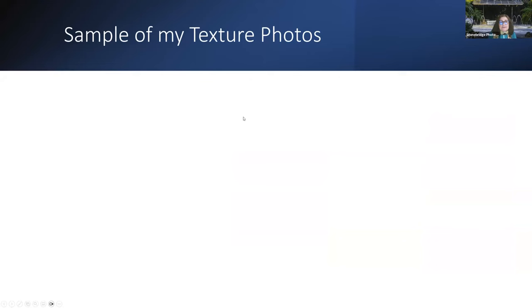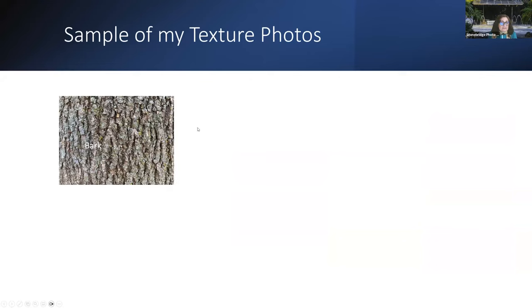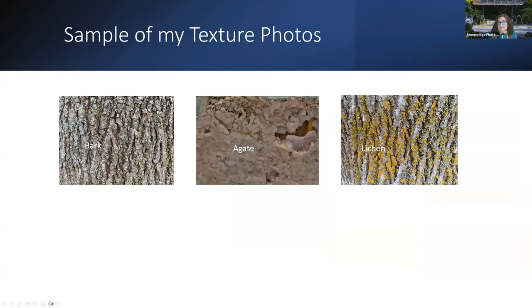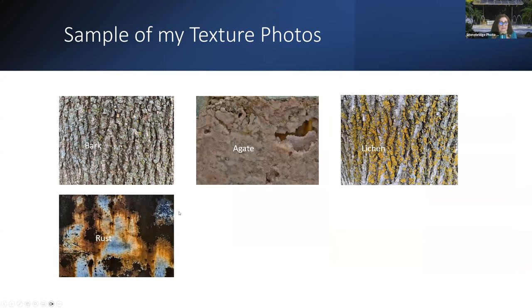Sample of my texture photos — these are some that I've taken: bark, agate. This is a table I have in my living room. Lichen, rust. You'd recognize that — from the boat yard probably.